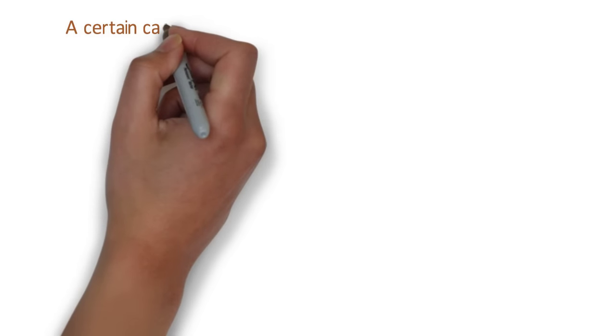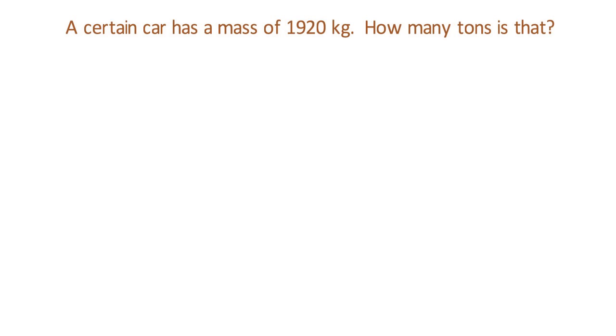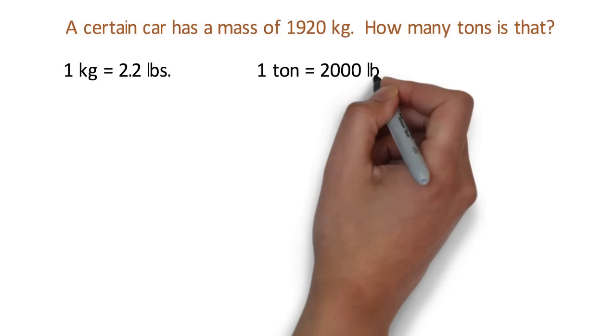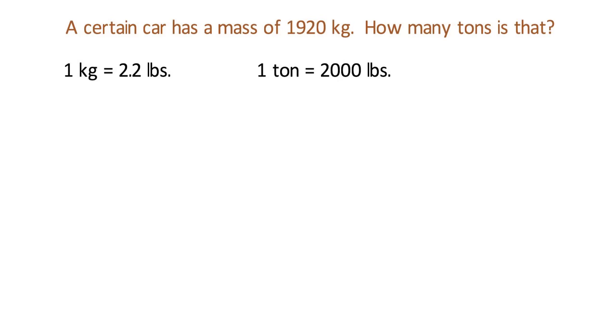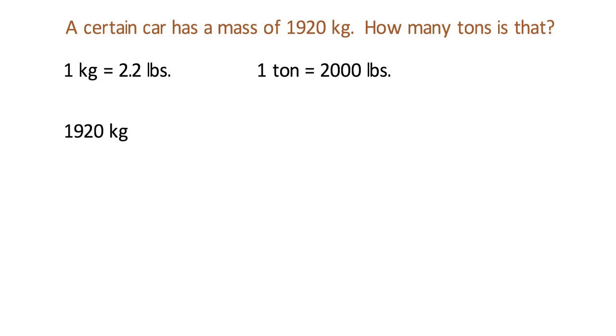A certain car has a mass of 1920 kilograms. How many tons is that? Just like always, we need the conversion factor before we can solve this, but this time we need two conversion factors. One to convert from kilograms to pounds, and another to convert from pounds to tons. So this is going to be a two-step problem. We start the problem by writing down the quantity from the question, 1920 kilograms.